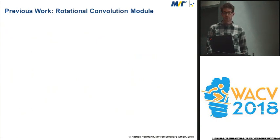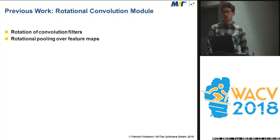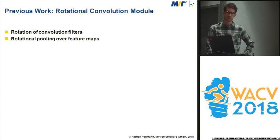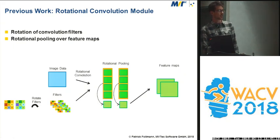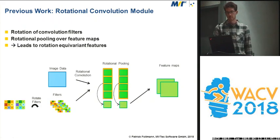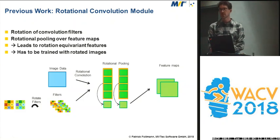There was some previous work done already, and in particular, the idea came up to rotate the convolution filters and then pool over the rotations or over the feature maps that were generated by the rotated filters. So first you take some input filters, you rotate them four times, you get four feature maps for each of the filters, then you pool over the different rotations, and you get two output feature maps. This leads to rotation equivariant features, but the problem is still that you have to train with rotated images to make the algorithm work in the end.